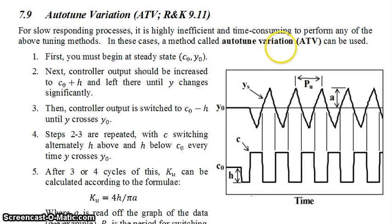First, you want your system to be at some sort of steady state, your controller signal at steady state being C_0 and your controlled variable at steady state being Y_0. What you'll want to do is do another setpoint step change by making your controller output be increased by some value H. Or in this graph over here, it's been decreased first.